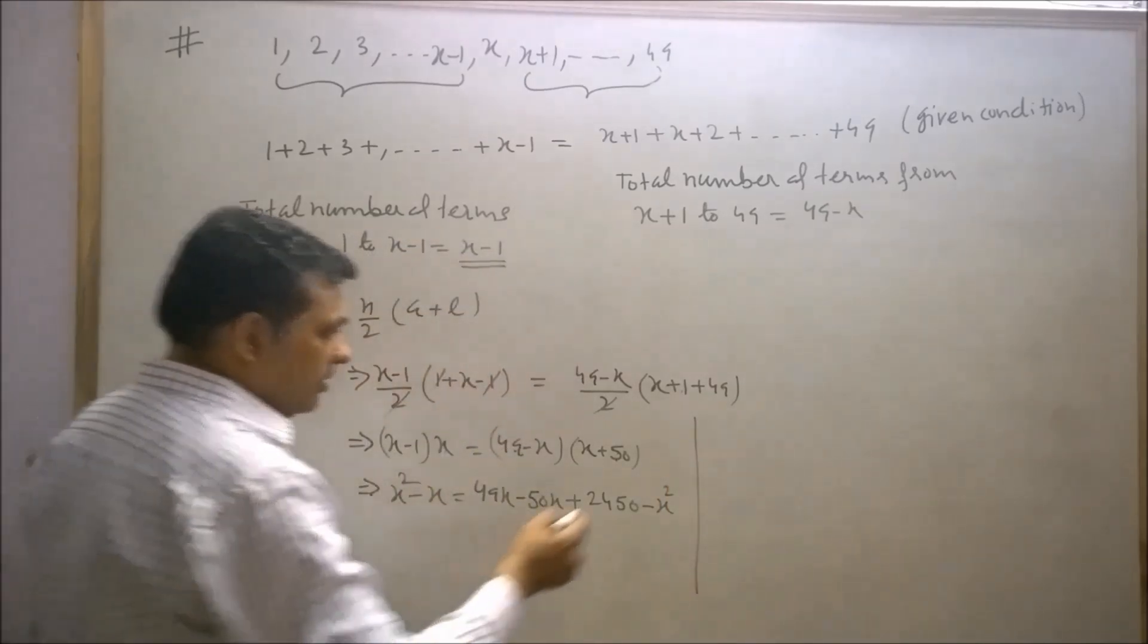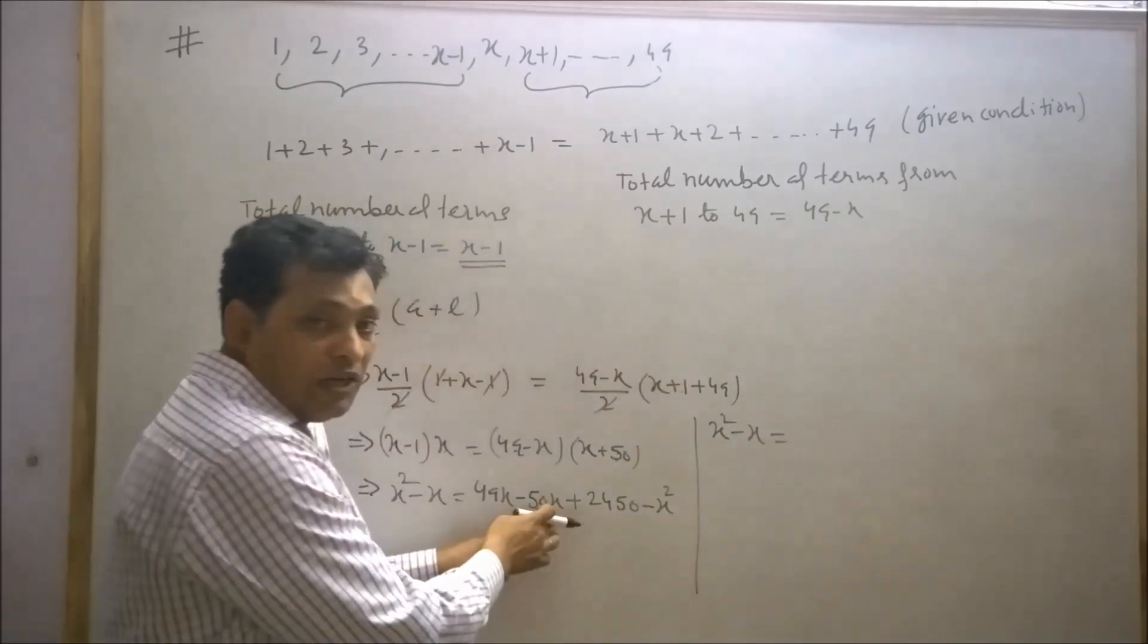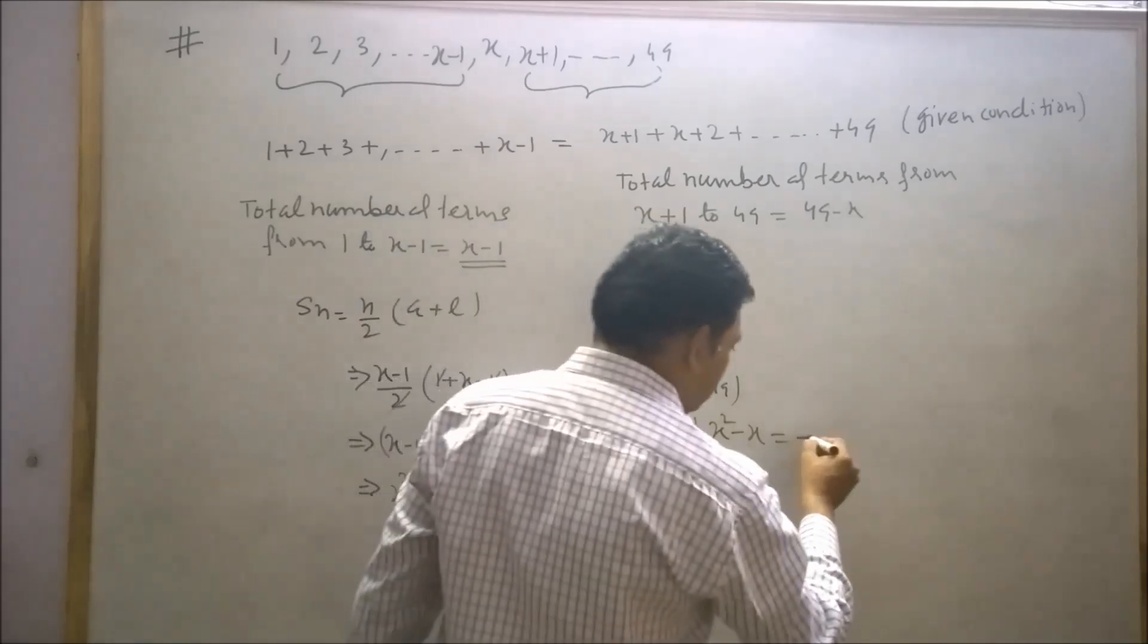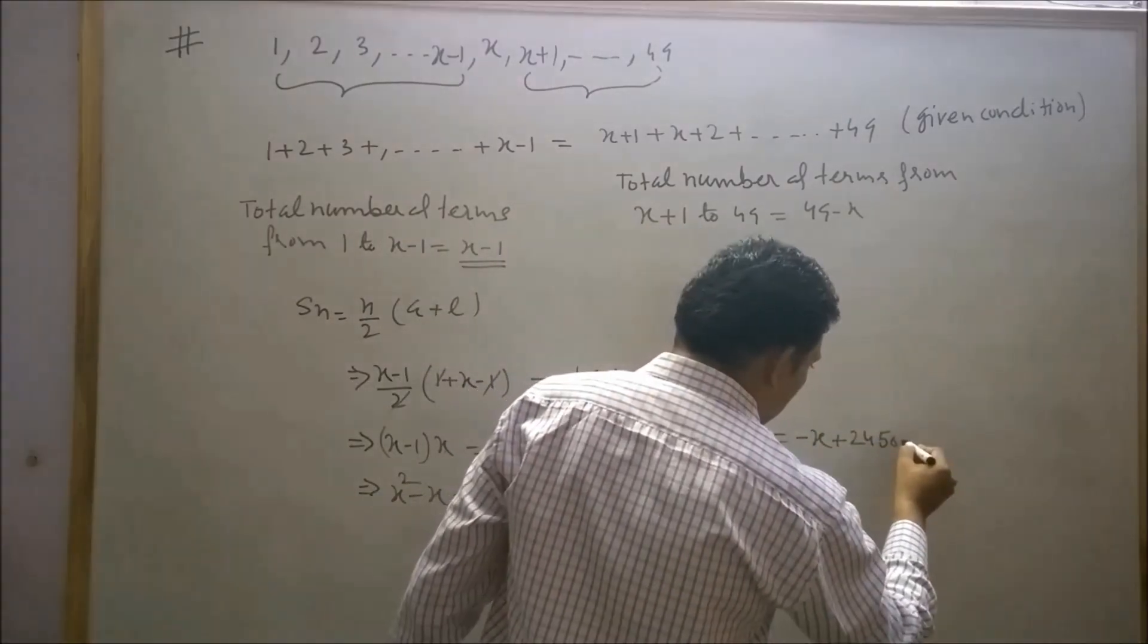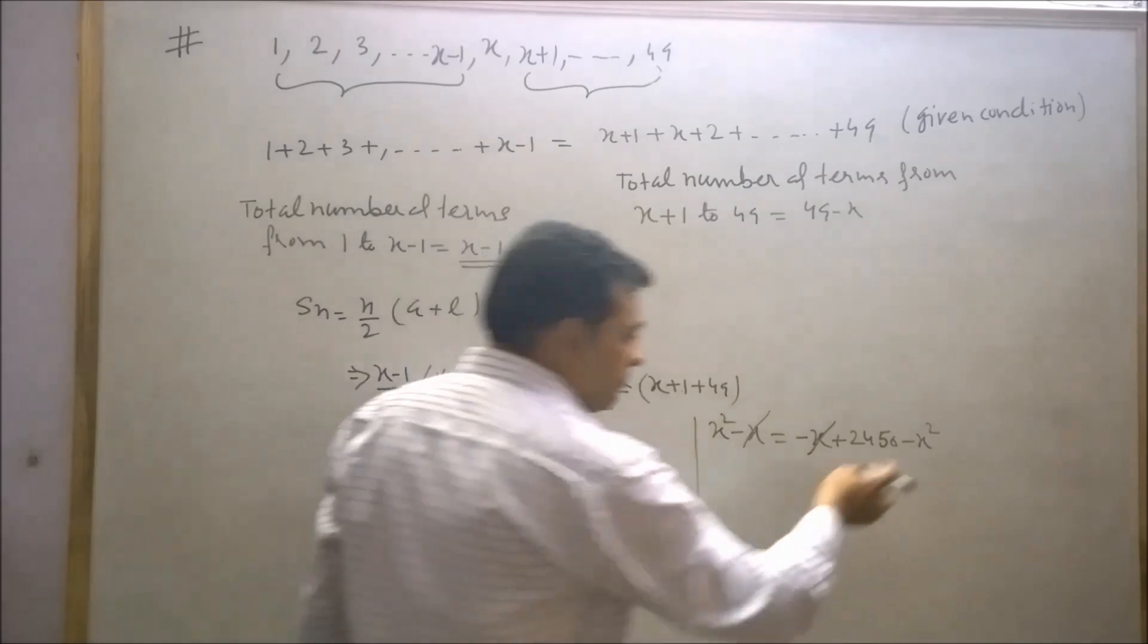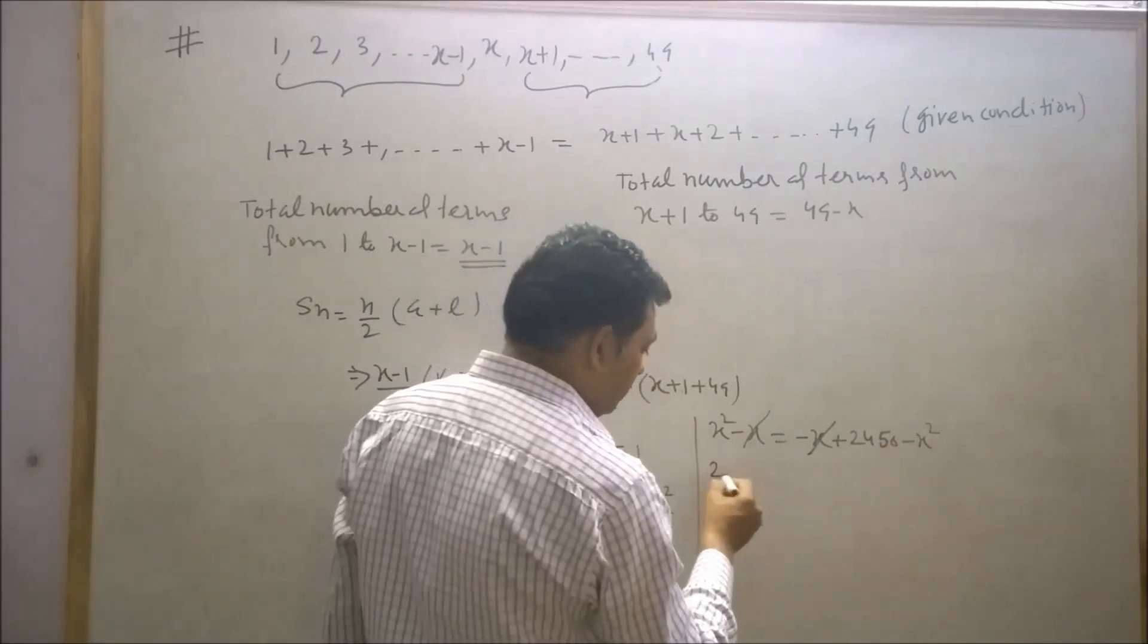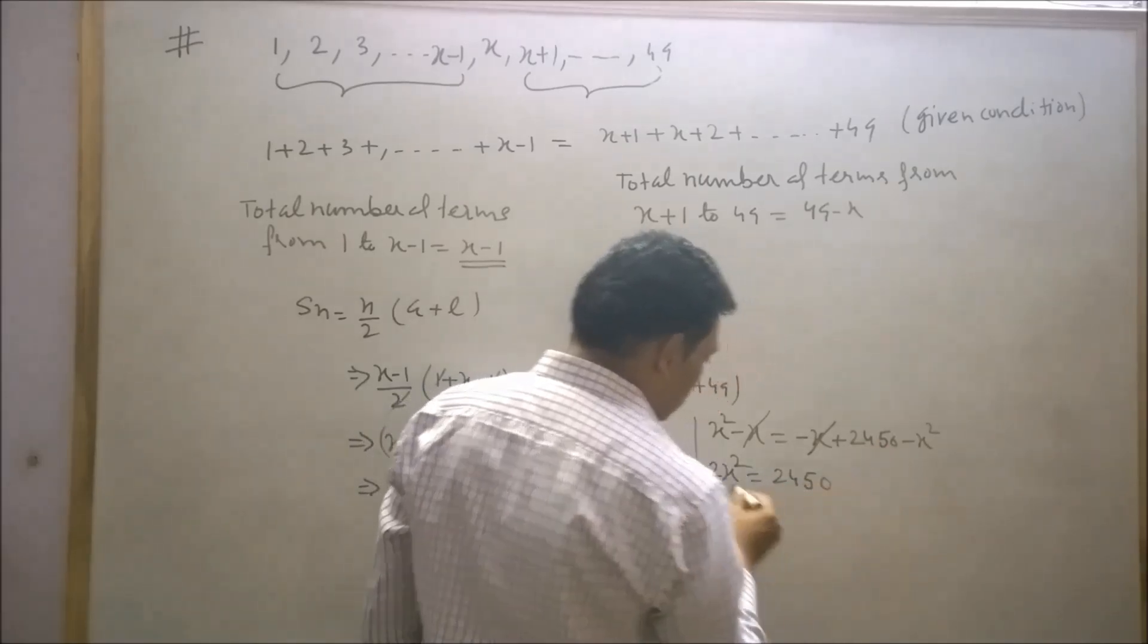This will be 49x - 50x + 49×50 is 2450, and x times x is x². So this will be -x². So x² - x is equal to -50x + 49 is equal to -x + 2450 - x². So x² - x, -x will be cancelled out. Now transpose x² to the left hand side.